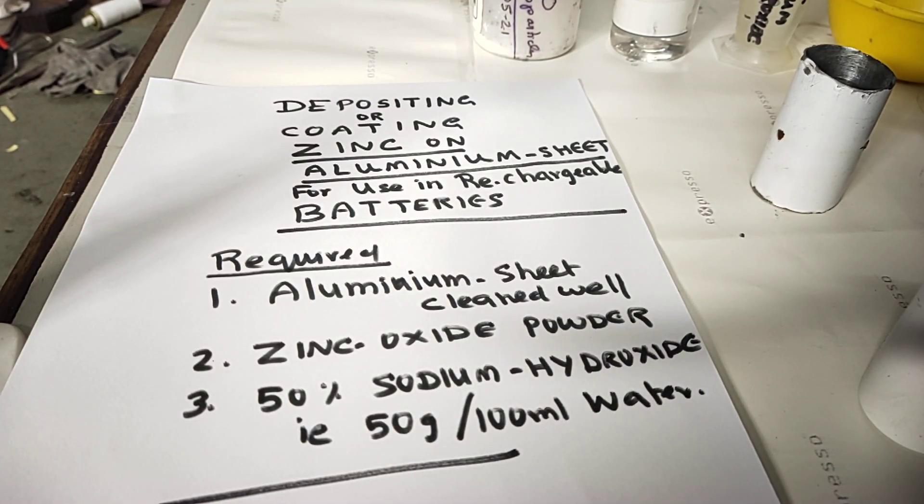Hi, today we can see how to coat zinc on aluminum sheet or aluminum containers for batteries. Inside the aluminum I have to coat zinc for better rechargeable cycles and better amperes. In this session we can see how to coat zinc on aluminum containers.